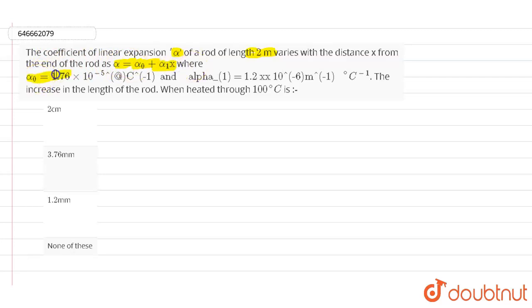Alpha naught value is 1.76 into 10 power minus 5 per degree Celsius, and the alpha 1 value is given as 1.2 into 10 power minus 6 per meter per degree Celsius. The increase in the length of the rod when heated through 100 degree Celsius is what we need to find out - the increasing length of the rod when heated in the temperature of 100 degree Celsius.